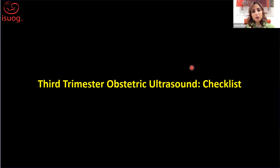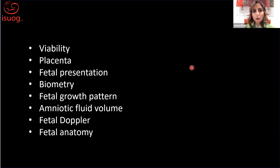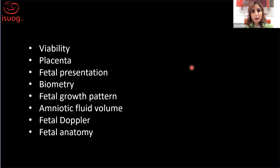I'd really like you to move away from the concept that the third trimester ultrasound is just a gross scan. We use a checklist approach, and this is the checklist we included in the guidelines — from viability to looking at the placenta, the fetal presentation, the biometry and growth, the amniotic fluid volume, dopplers depending on the indication, and the fetal anatomy. I'm going to focus particularly on the fetal anatomy section.